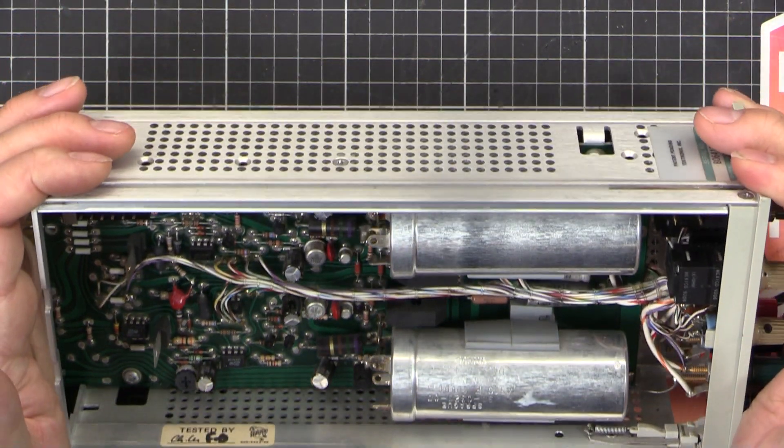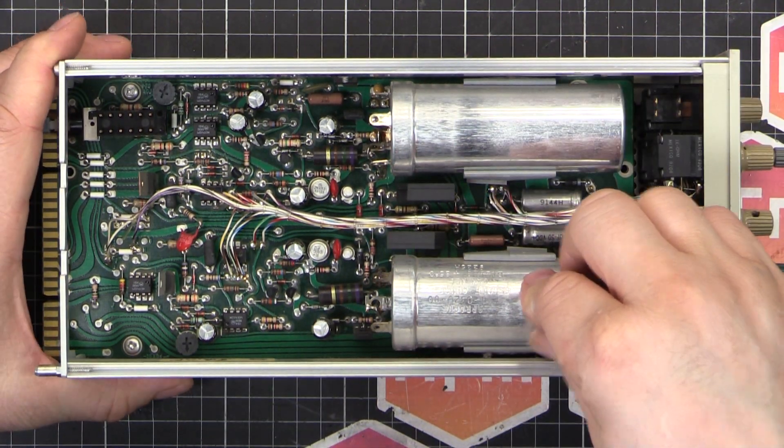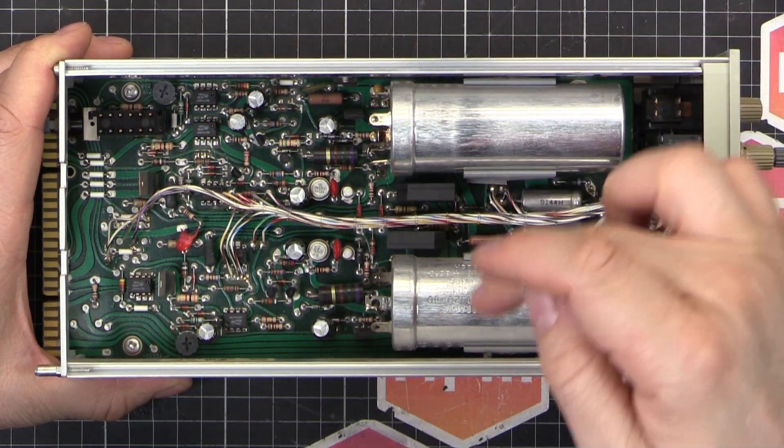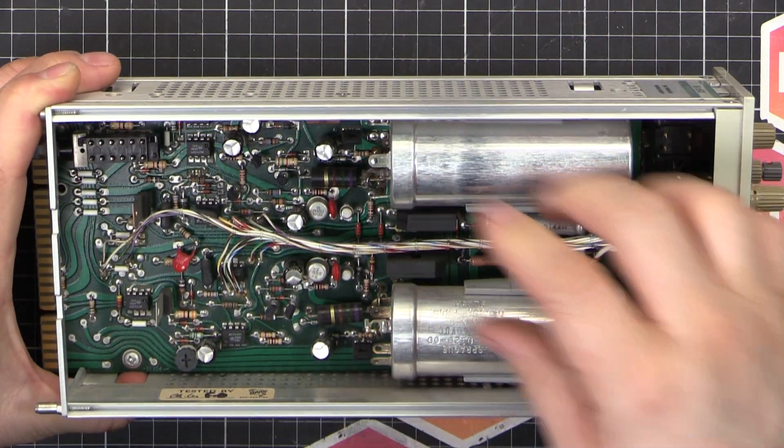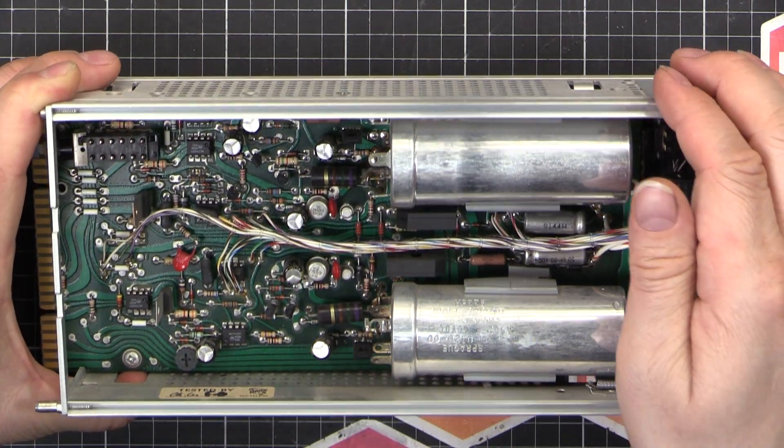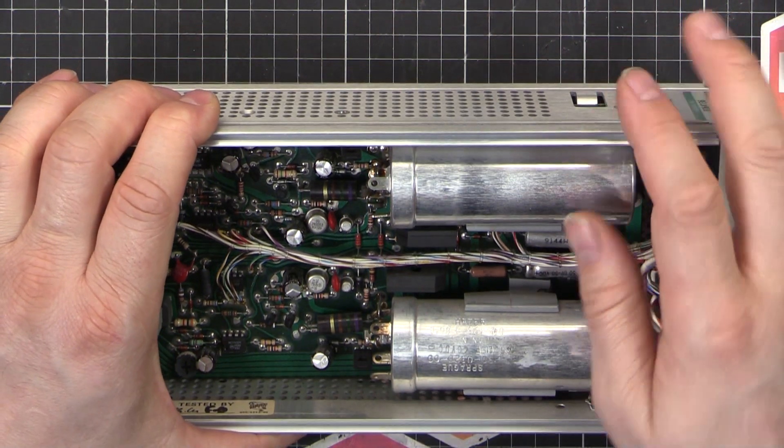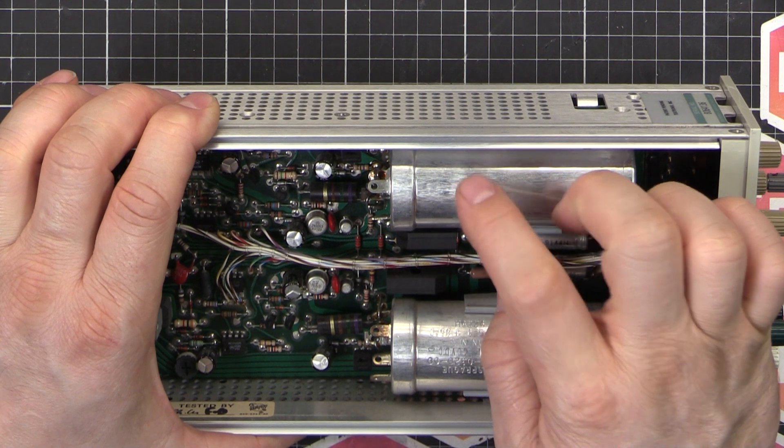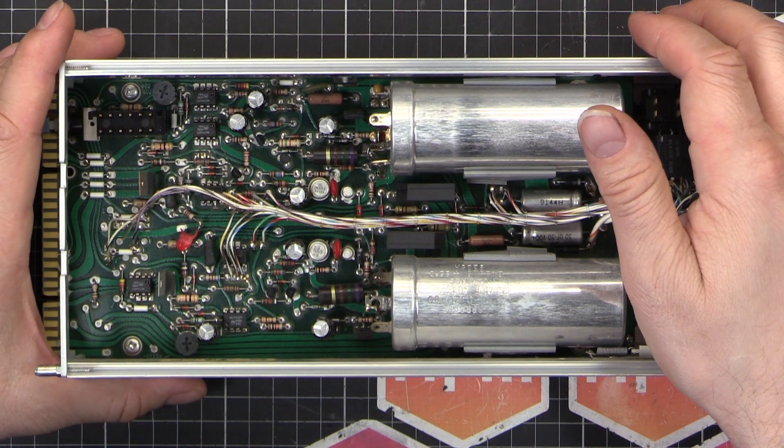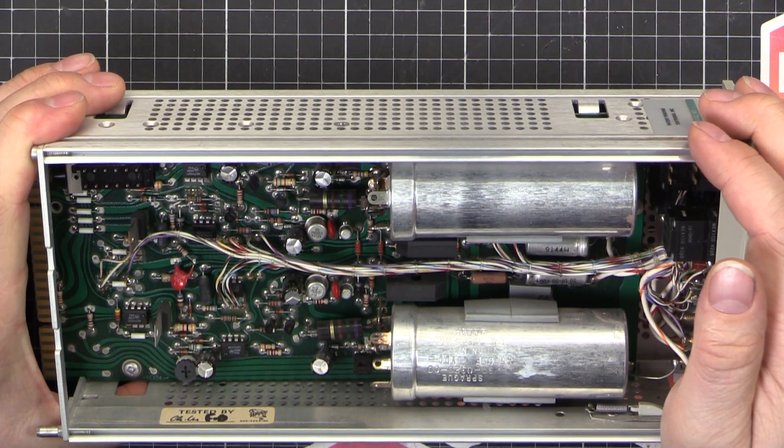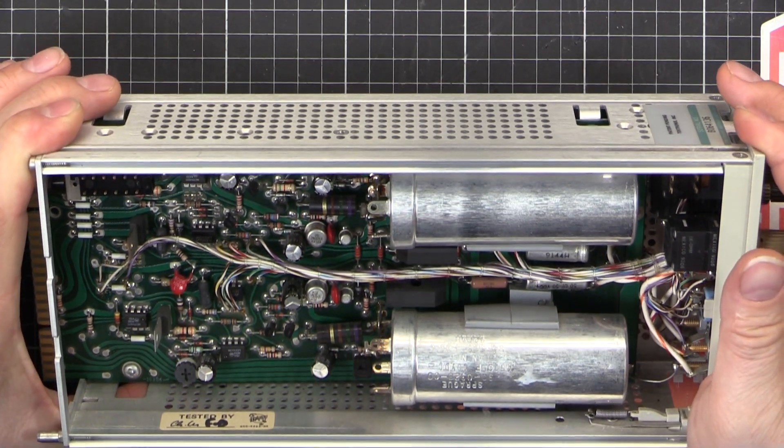So here we are looking in the nether regions of this unit. The most obvious thing you've obviously noticed is the two big silver cans here. They're the bulk filter capacitors for the positive and negative supply rails. Sprague units, they don't make this kind of package anymore, but you can cut them open and re-stuff them with a new capacitor if you want. I have seen them before. I have them in some Fluke DC 1000 volt calibrators. Yeah, they use them in there, so they must have been common for the time, but nowadays they're not so common at all. You can't get them new at all.